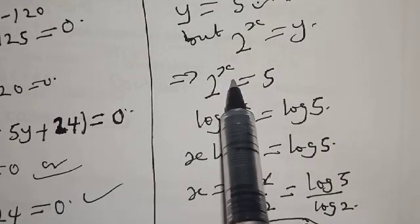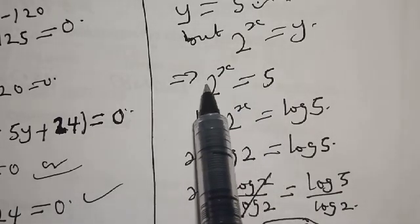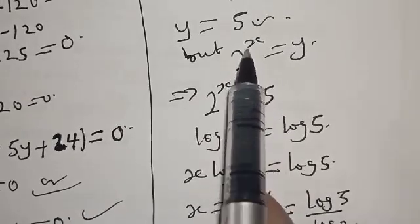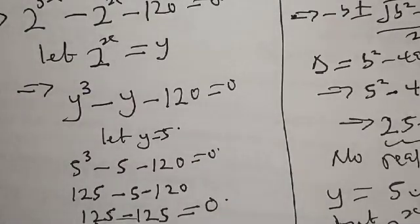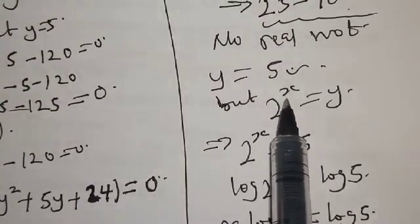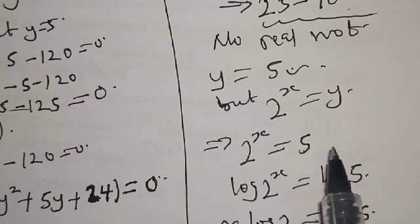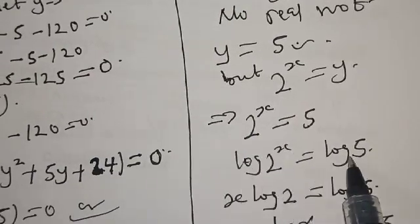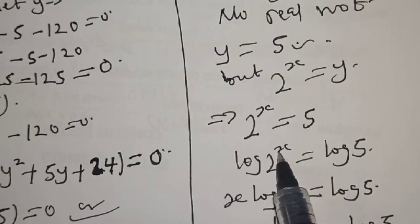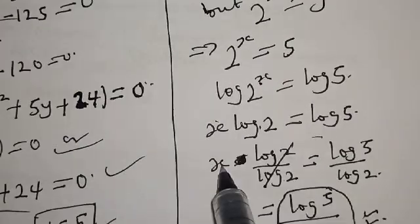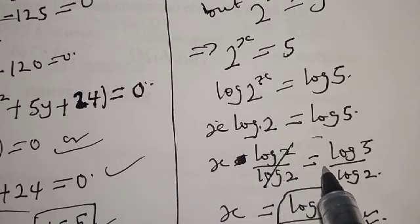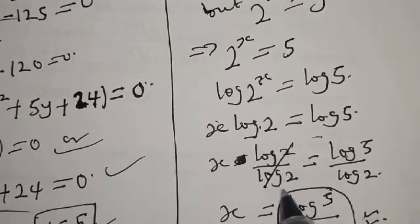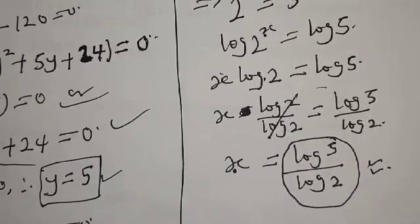Once again, we said 2 raised to power x equals 5. We take the log of both sides: log of 2 raised to power x equals log 5. By the law of logarithms, x log 2 equals log 5. Dividing both sides by log 2, we get x log 2 over log 2 equals log 5 over log 2. Therefore x equals log 5 over log 2. That is our final answer. Thank you.